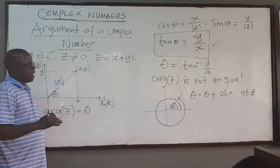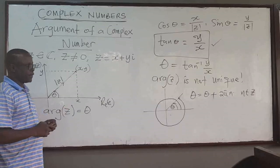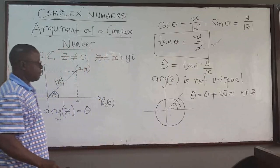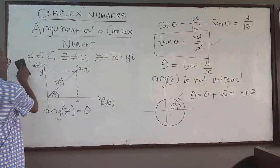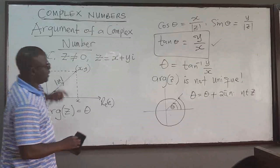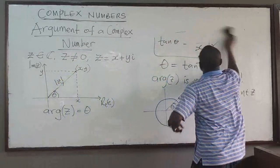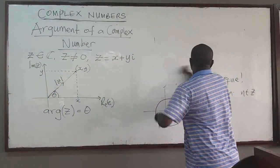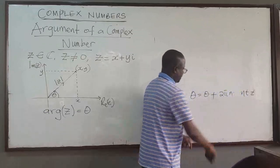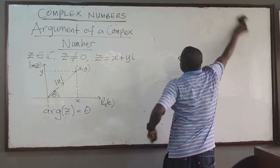Because the argument is not unique, we need to define another argument for a complex number so that we get unique values. That is often referred to as the principal part of the argument of the complex number. When you talk about the principal part of the argument, you want to restrict your argument to some specific angles.